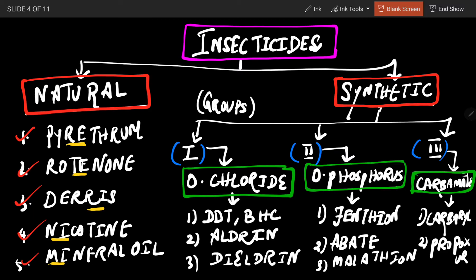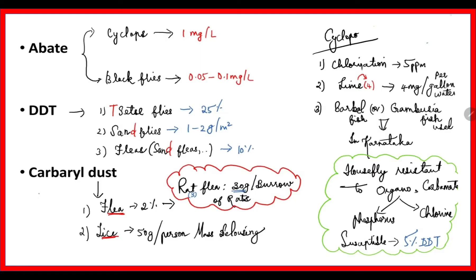Coming to Synthetic insecticides, it is basically a conventional classification where we have excluded the inorganic chemicals and Larvicidal Oil. Organochlorides include DDT, BHC, Aldrin, and Dieldrin. Organophosphorus includes Fenthion, Abate, and Malathion. Carbamates include Carbaryl and Propoxur. This classification is the most important to recollect and remember, and all these insecticides we are going to discuss.